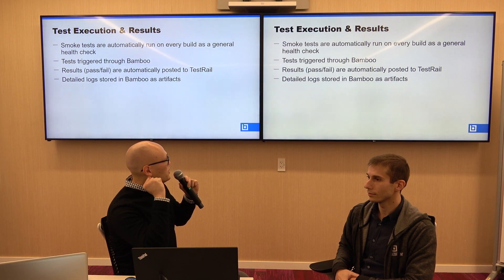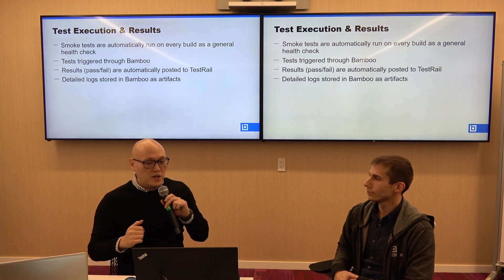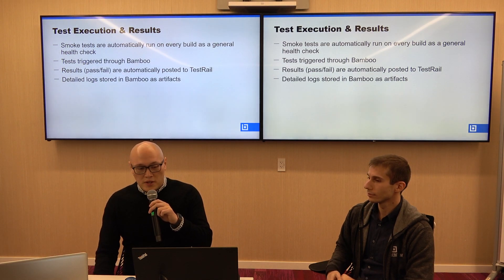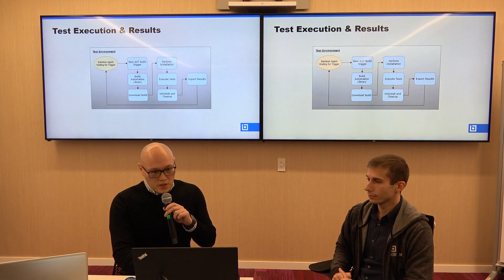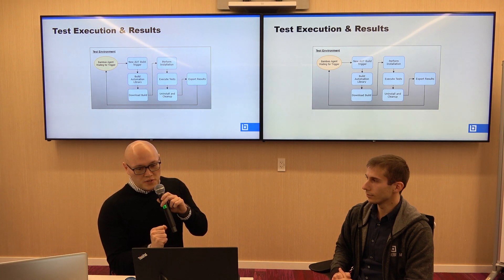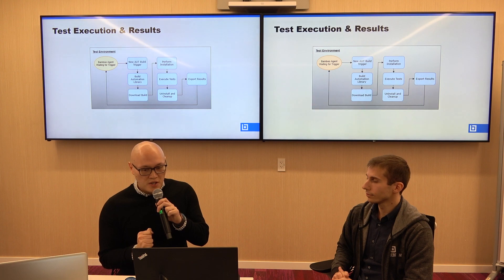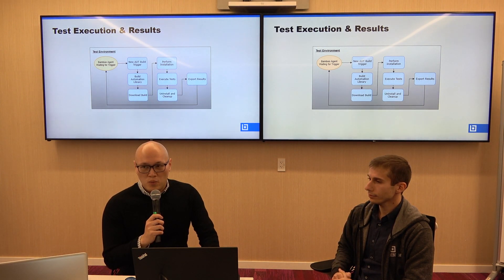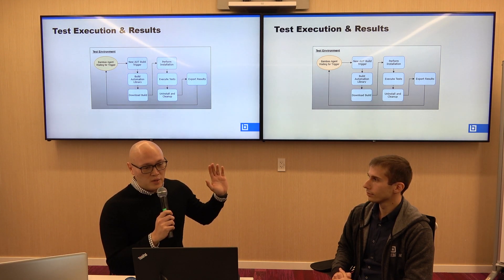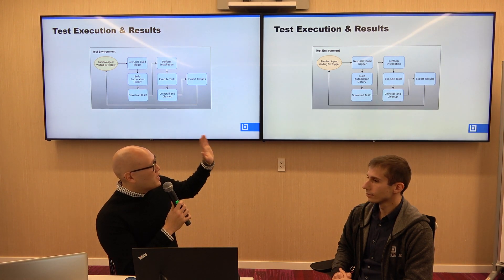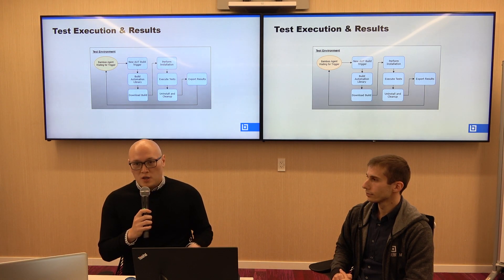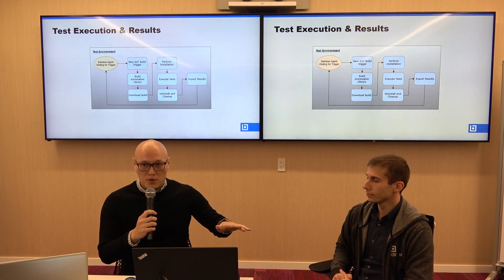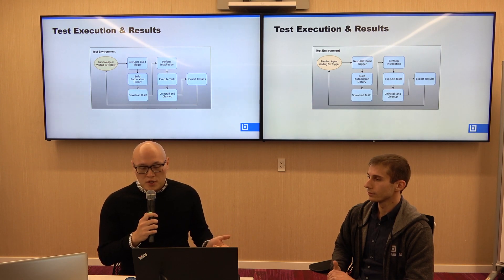Our tests are triggered through Bamboo. Our pass/fail results are automatically posted to our test management software, TestRail, and if we need them, we have detailed logs stored in Bamboo as artifacts. This is a diagram of how our test execution works on our environments. Each environment is a remote Bamboo agent that sits idle waiting for a trigger — in this case, a new build of our application. When that happens, we build our automation library, download the build onto the test environment, perform installation, execute tests, uninstall and clean up the system so it's ready for the next batch of tests, then export results.